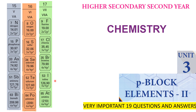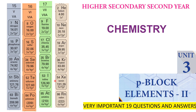The last group, 18th group, that is inert gases or rare gases. Except helium, the general electronic configuration is NS2 NP6. Neon: 2S2 2P6, Argon: 3S2 3P6, Krypton: 4S2 4P6, Xenon: 5S2 5P6, Radon: 6S2 6P6. In the electronic configuration, very important.